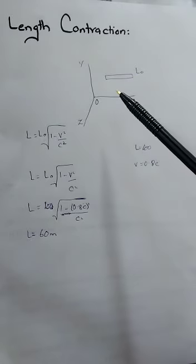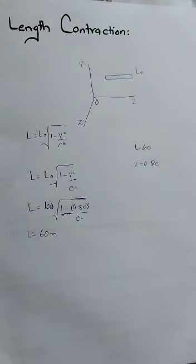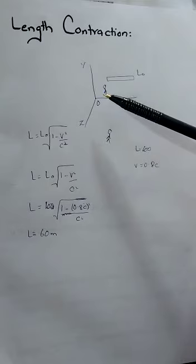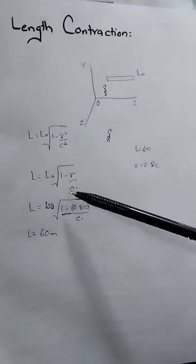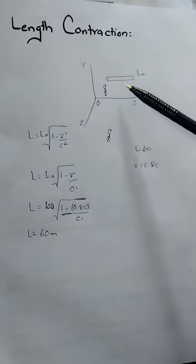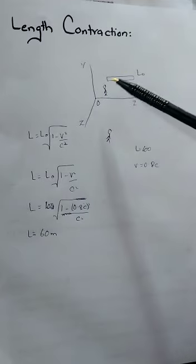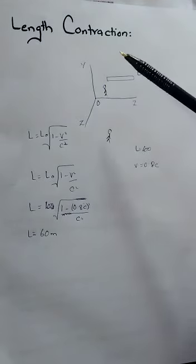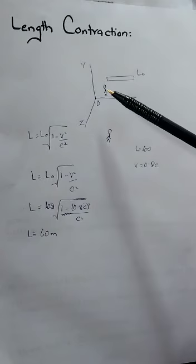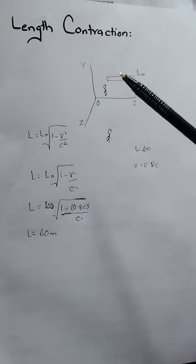Now, if another observer is outside that frame of reference, and for that observer this frame of reference moves with a speed comparable to the speed of light — say 0.8 times the speed of light — then for this observer the length of the rod becomes shortened. The length measured by this observer is less than the length measured by the observer in the rest frame. This is called length contraction.